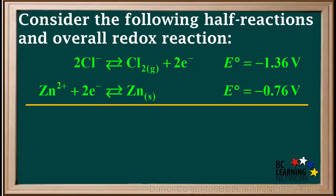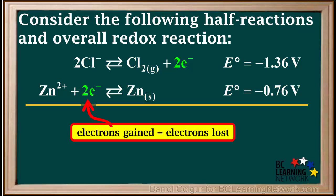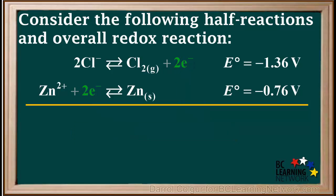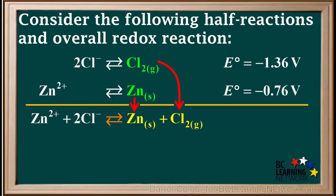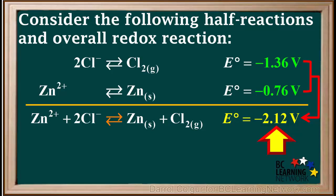We'll add these two half-reactions to get the overall redox equation. Notice the electrons gained by the zinc ion are equal to the electrons lost by the chloride ions. Therefore, electrons can be cancelled before adding the two half-reactions. On the left side, we have Zn2+ plus 2Cl-. And on the right side, we have Zn solid plus Cl2 gas. To get the E0 value for the overall redox equation, we add negative 1.36 volts and negative 0.76 volts to give us negative 2.12 volts.